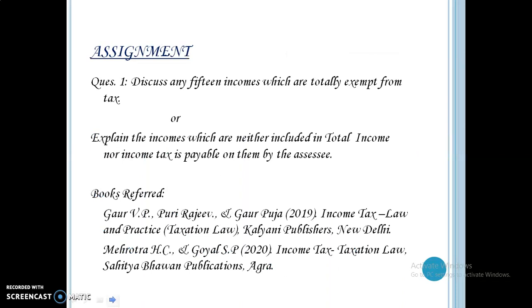Now it's time for an assignment. The first question is: discuss any 15 incomes which are totally exempt from tax. Sometimes a tricky question is asked by the examiner — these tricky questions are indirectly asked in the form of statements. The answers to these statements are given in the introduction part of the chapter or in the meaning of the concept. Keep in mind that the introduction or meaning is of utmost importance. You may be asked to explain the incomes which are neither included in total income nor is income tax payable on them by the assessee — the answer will be the same. For this, I have referred to these books.